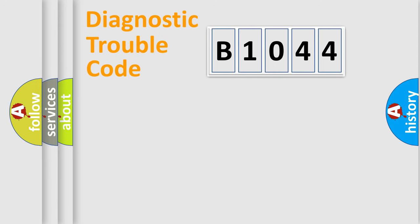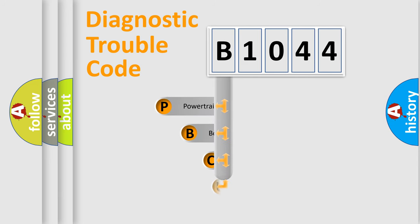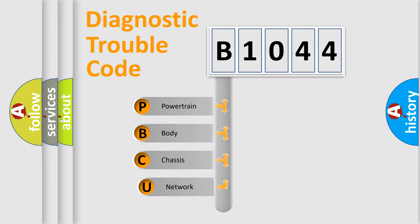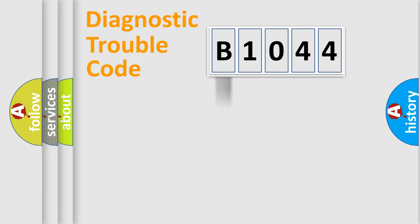Let's do this. First, let's look at the history of diagnostic fault code composition according to the OBD2 protocol, which is unified for all automakers since 2000. We divide the electric system of an automobile into four basic units: Powertrain, Body, Chassis, and Network.